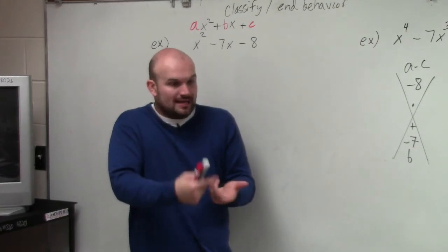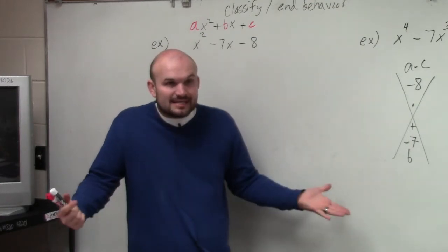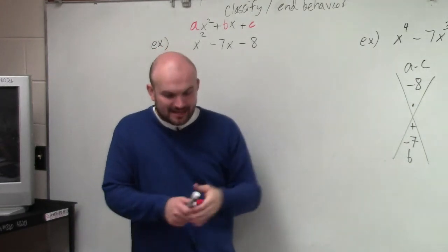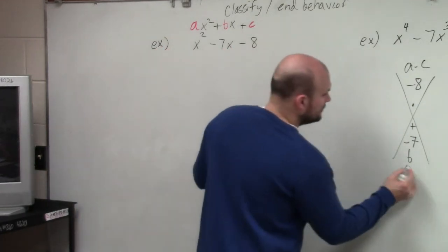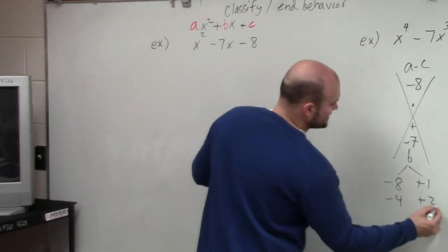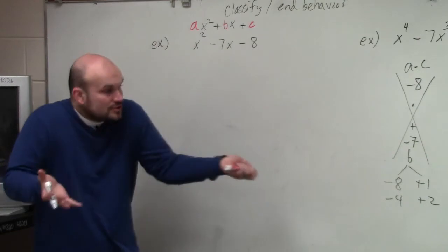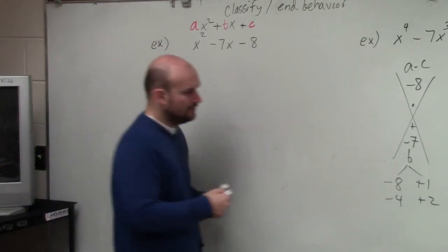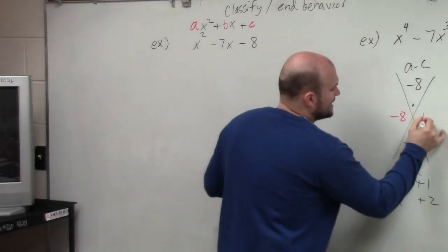So then we look at what two numbers multiply to give you negative 8. Negative 8: 8 and 1, 4 and 2. That's it. But since they're adding to give you a negative number, the larger of your factors has to be negative. So it's either negative 8 and positive 1, or negative 4 and positive 2. Those are your only two choices. And our answer finally ends up being negative 8 and positive 1.